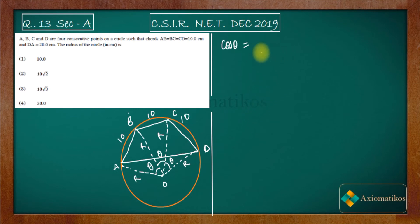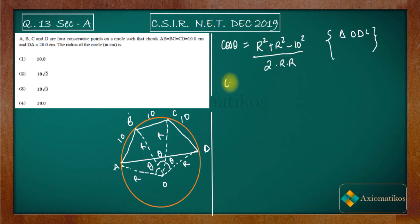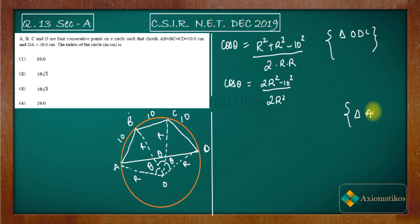We apply the cosine rule on triangle ODC. Using cosine rule: cos θ = (r² + r² − 10²) / (2 · r · r) = (2r² − 100) / (2r²). This gives us our first equation relating cos θ to r.